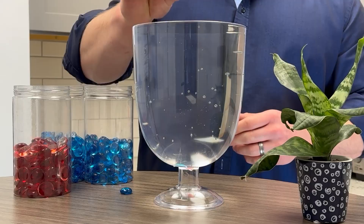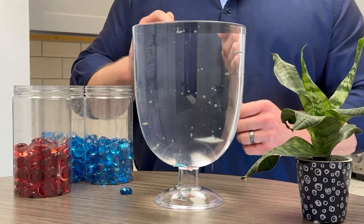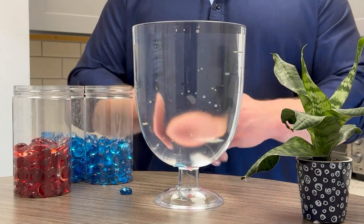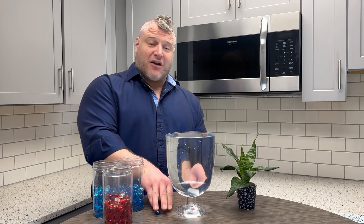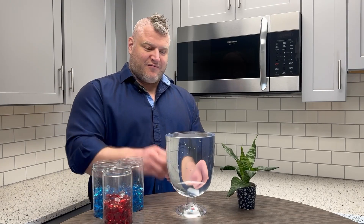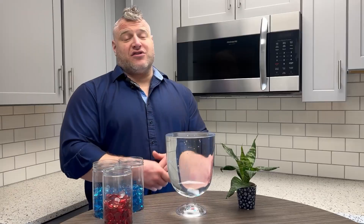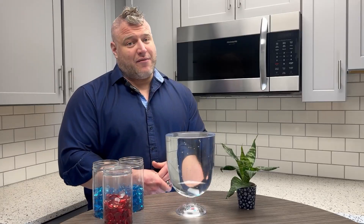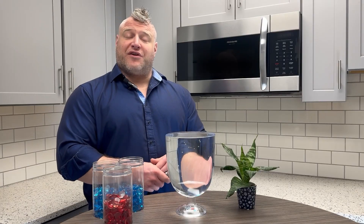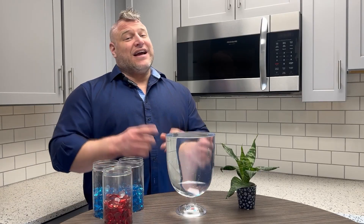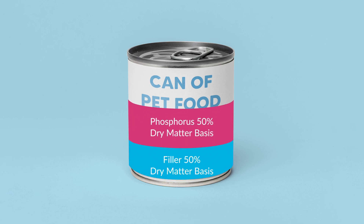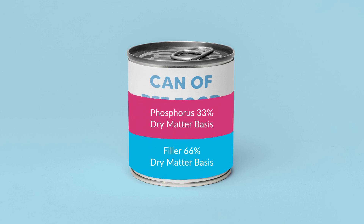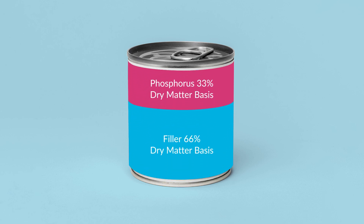More powdered cellulose — the percentage is now 33%. Adding even more, the percentage of phosphorus on a dry matter basis drops to 25%. You can see how the percentage can drop without the actual amount of phosphorus changing.